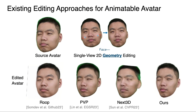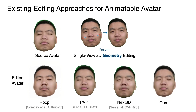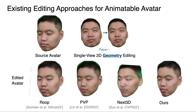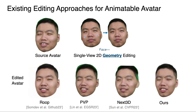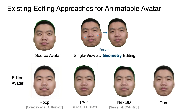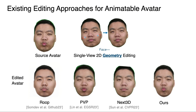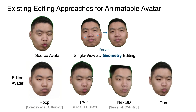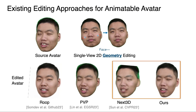We take two editing cases as examples. For geometry editing, we reduce the width of the face in a single image. The roof fails in presenting the reduced face. PVP cannot reach the same editing magnitude of the edited image. And Next3D has a significant identity shift with varying viewpoints.